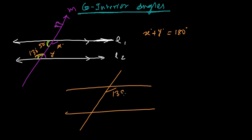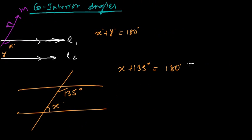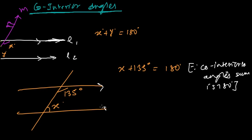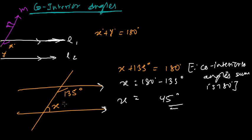Let's see an example. If this angle is 135 degrees, what is the value of x? You write: x plus 135 degrees equals 180 degrees, because co-interior angles sum to 180 degrees when lines are parallel. So x equals 180 minus 135, which gives x equals 45 degrees.